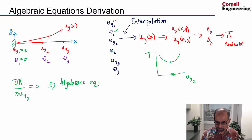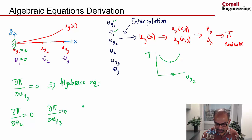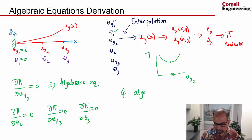Similarly, if I want to find the value of the rotation at node 2 that minimizes potential energy, I would set the derivative of pi with respect to theta 2 equal to zero. So that's my second algebraic equation. This will give me the third algebraic equation. And if I set this derivative to zero with respect to theta 3, that'll give me the fourth algebraic equation. So I'll get four algebraic equations, and these will be linear.